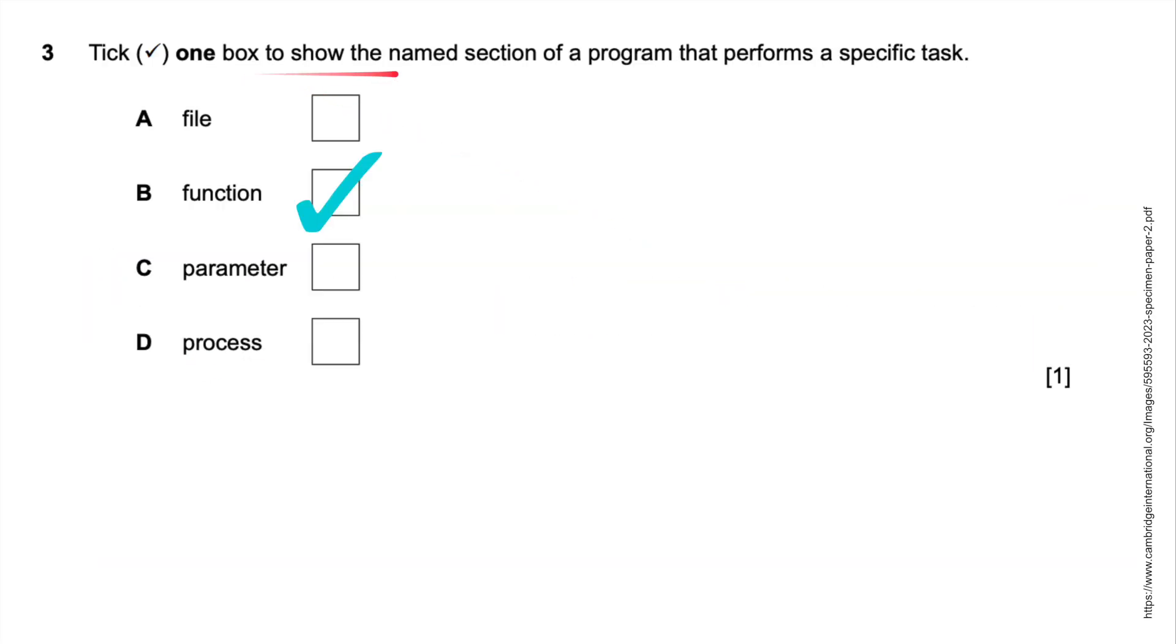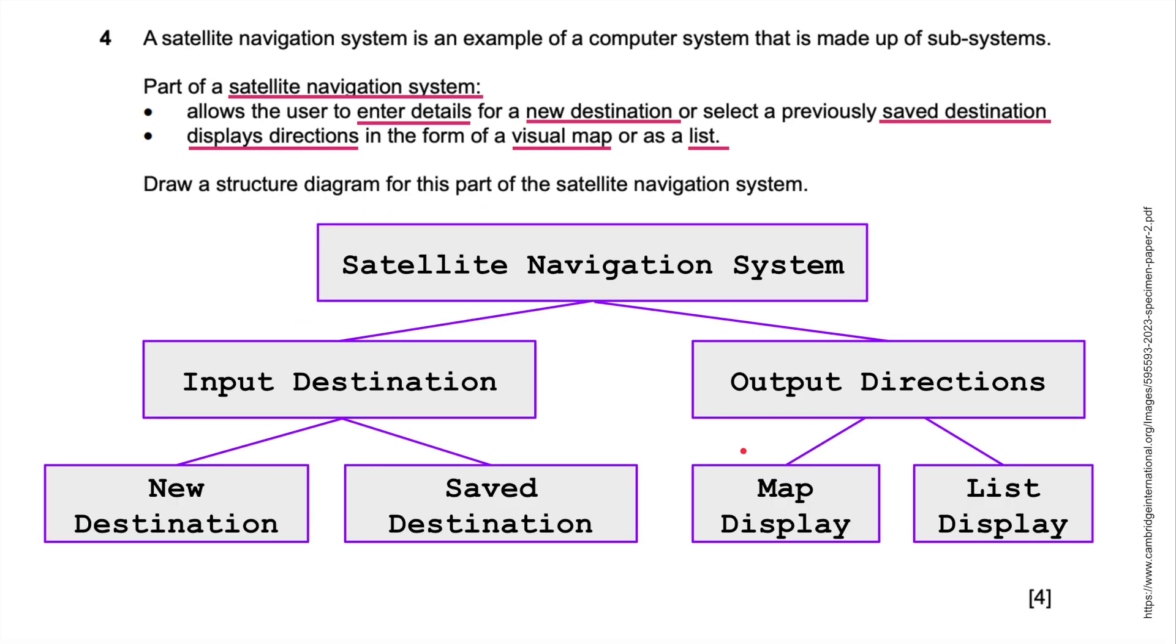That's an example of verification. Nice easy one. Tick one box to show the named section of a program that performs a specific task. A task is done using a function. File is generally using a database. Some people might say parameter, but it has nothing to do with it. Yeah, a function.